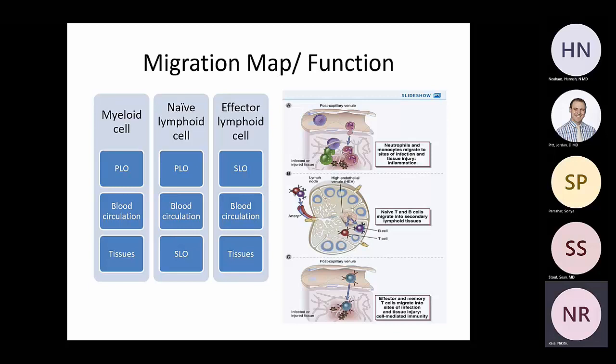What is the migration map of these cells? If it's a myeloid cell, it is produced in the primary lymphoid organ — the bone marrow — then enters the circulation and stays there until needed, at which point it moves into the tissue. Lymphocytes are different: depending on the phase of the lymphocyte, they might end up in different places.